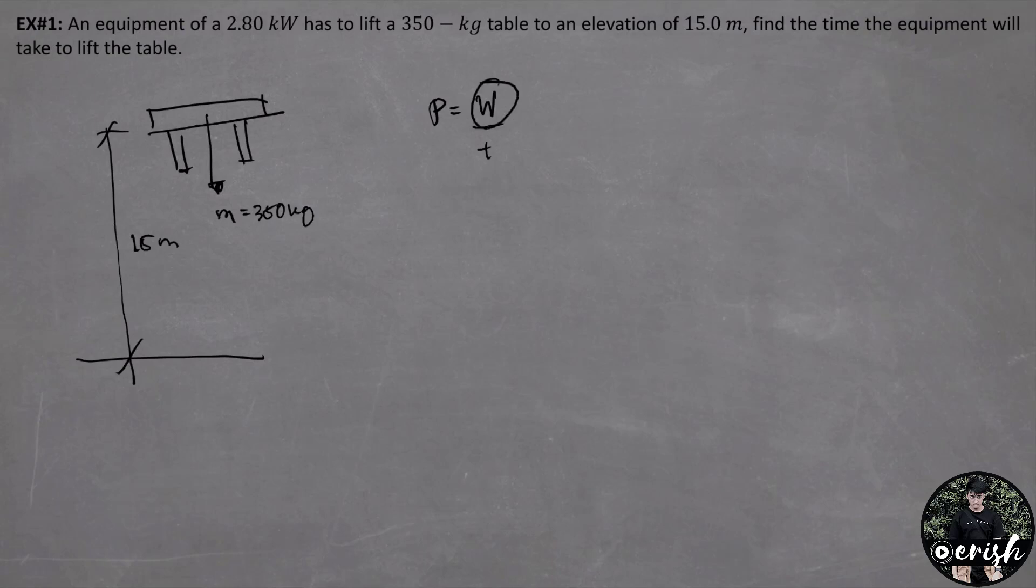Now, for the work, we need to know the value of work. And we have here, the value of work is force times the distance over the time. And to solve for the force, the force that exists on our object which is the table is mass times gravity.